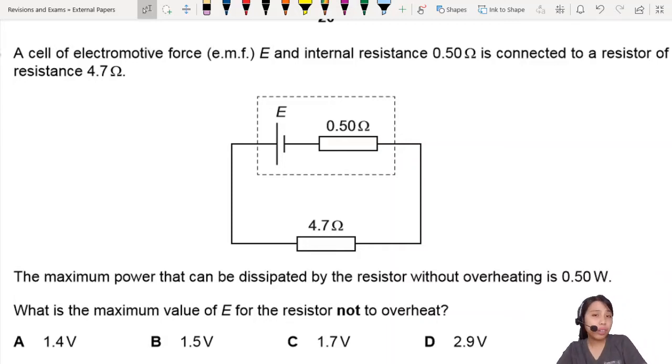Here is a cell with internal resistance connected to an external resistor, 4.7 ohms. Maximum power that can be dissipated by the resistor without overheating is 0.5 watts.